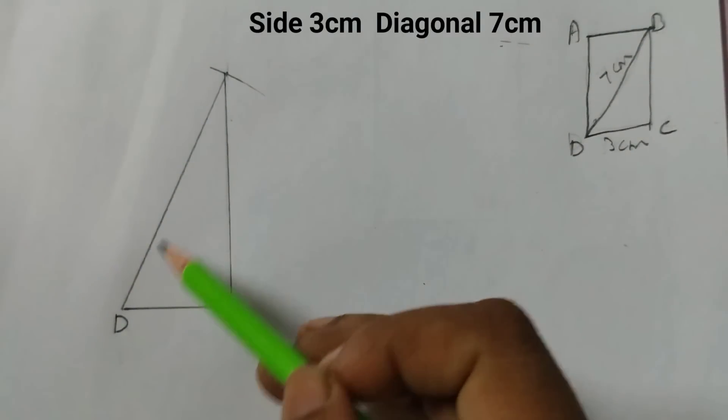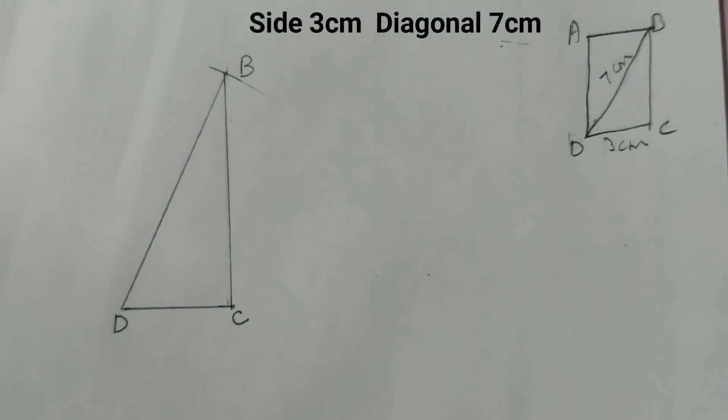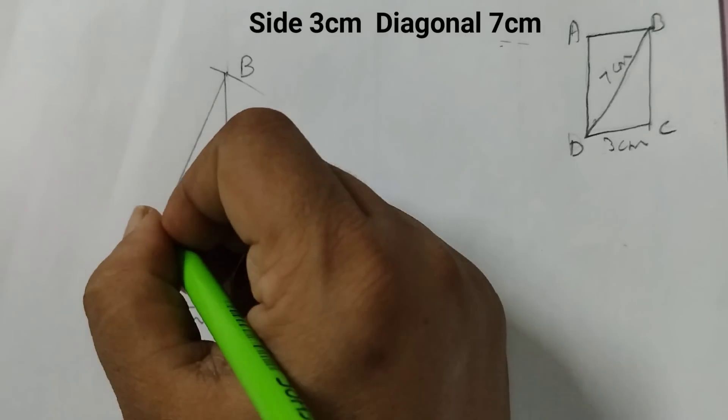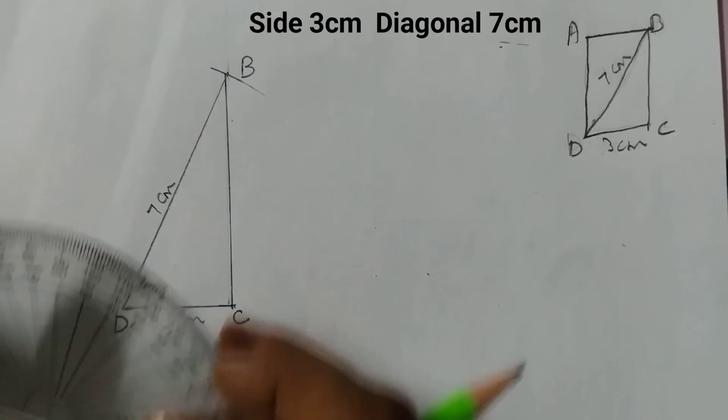In my previous video I have not drawn this point. This point B should be 7 cm, and this is 3 cm, and this is 7 cm.